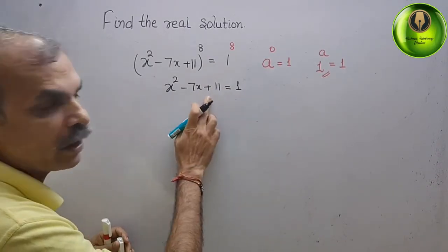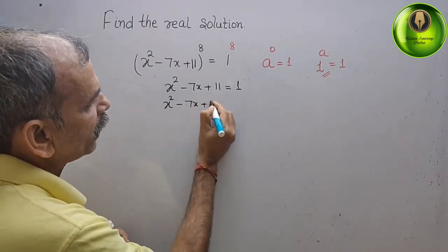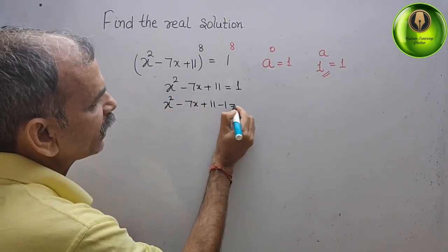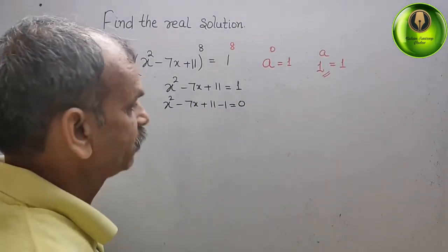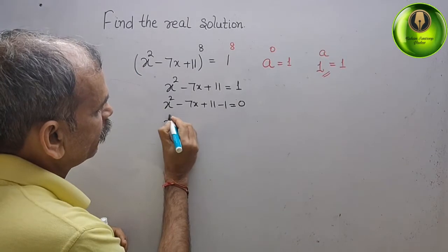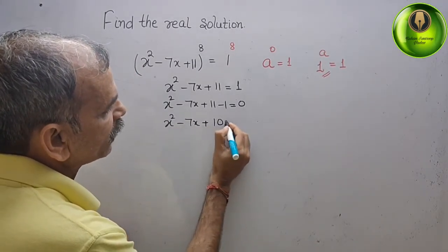Bring this 1 to left side. It will be x square minus 7x plus 11 minus 1, that gives you 0. 11 minus 1 is 10. x square minus 7x plus 10, that gives you 0.